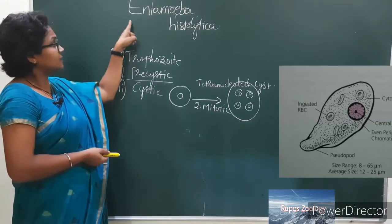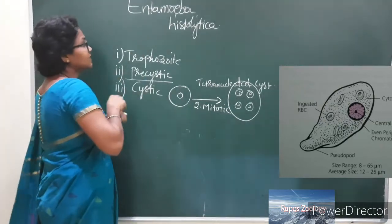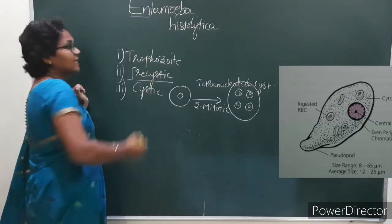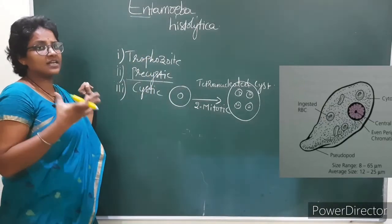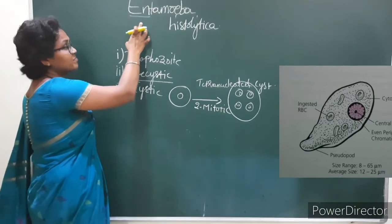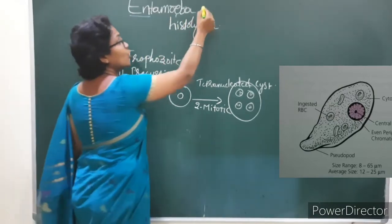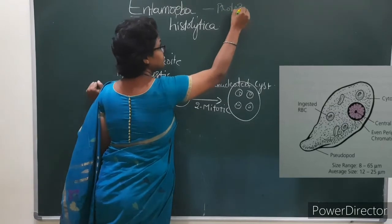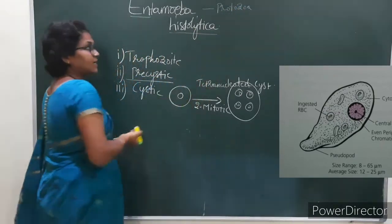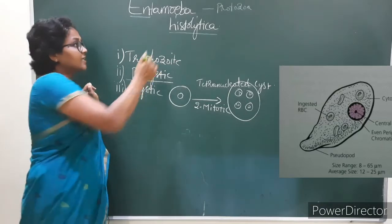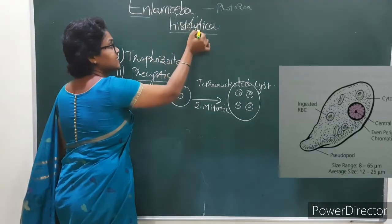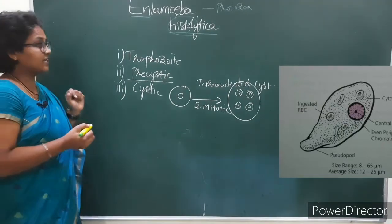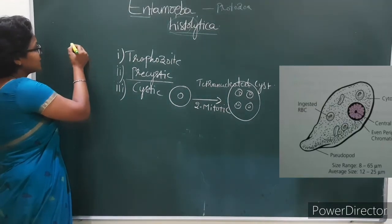Entamoeba histolytica is an enteron parasite — it lives in the intestine of man. It belongs to protozoa. Histolysin is the enzyme secreted by Entamoeba histolytica. Now let us look at the structure of Entamoeba histolytica.